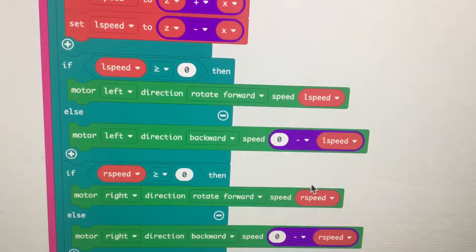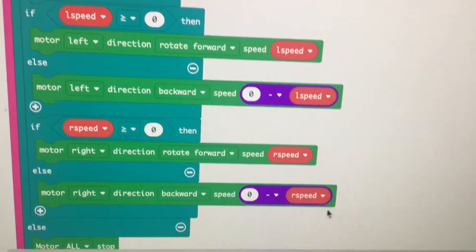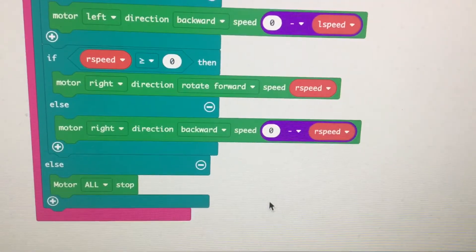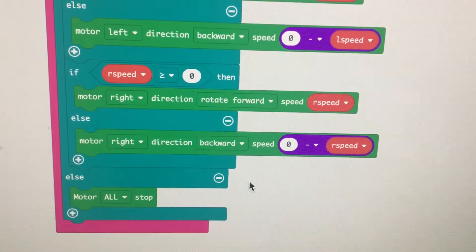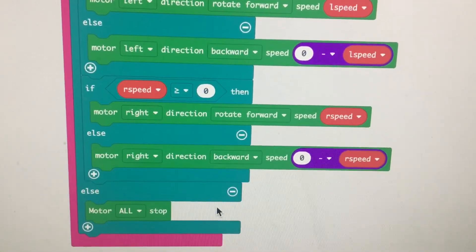And then I do the same thing for the right wheel. And then at the bottom, we have what to do if turn on is off, which is stop all the motors.